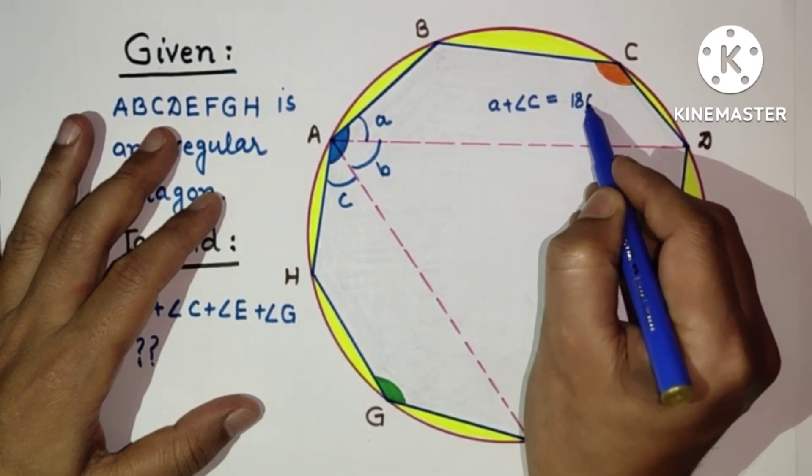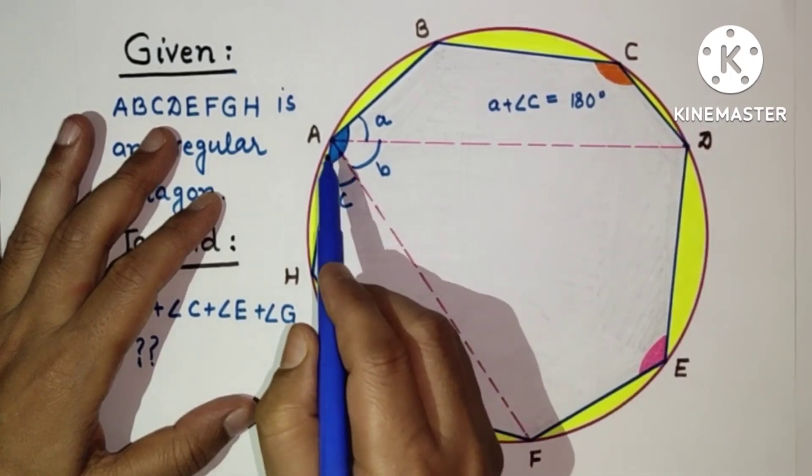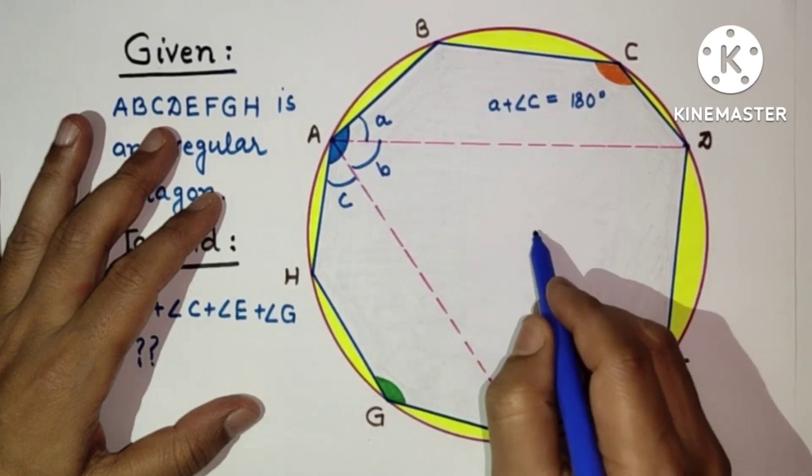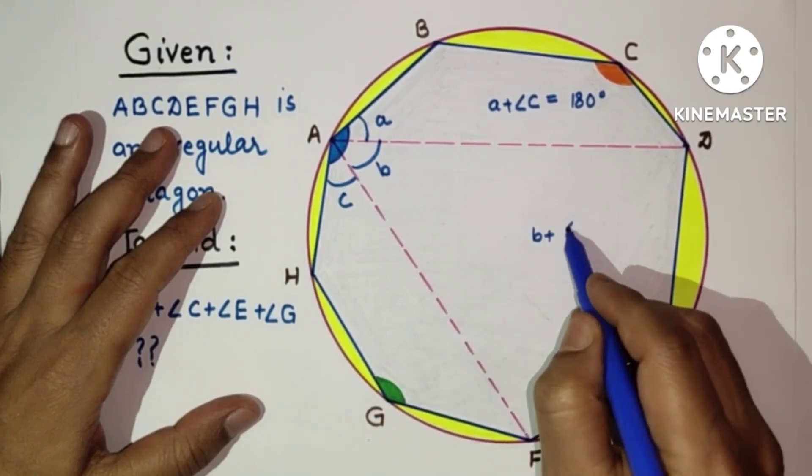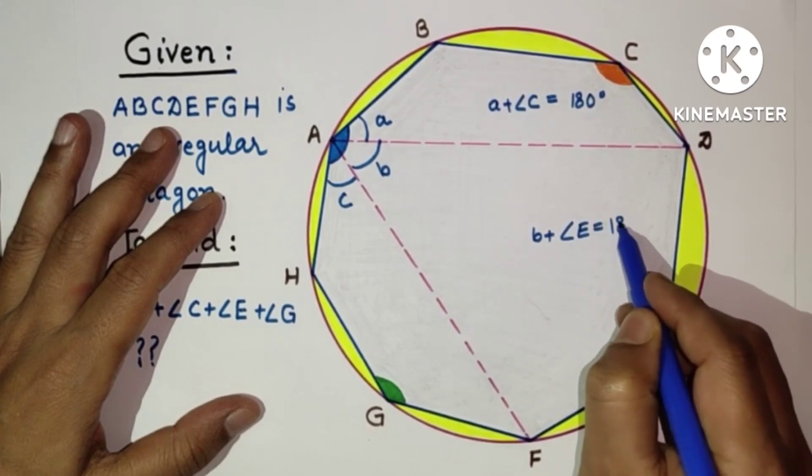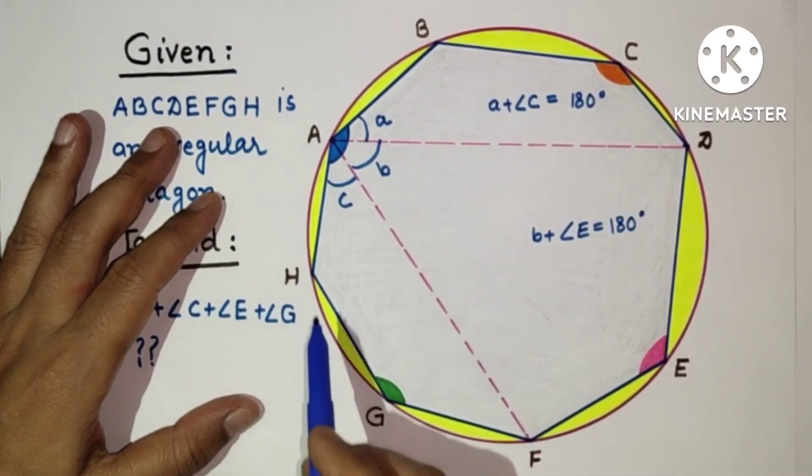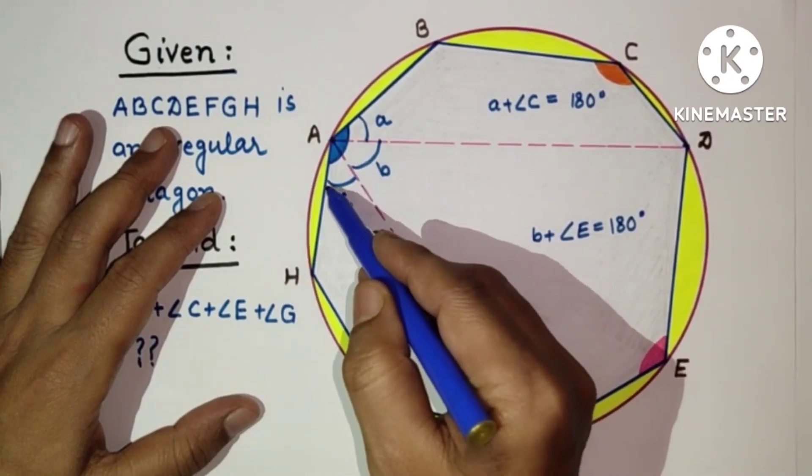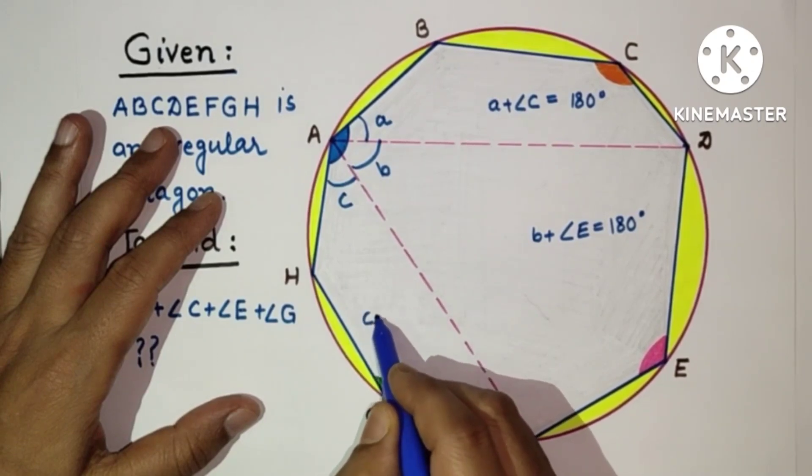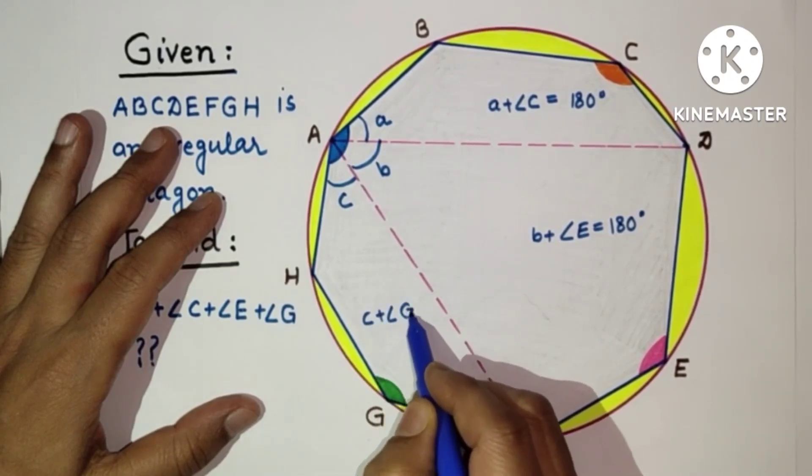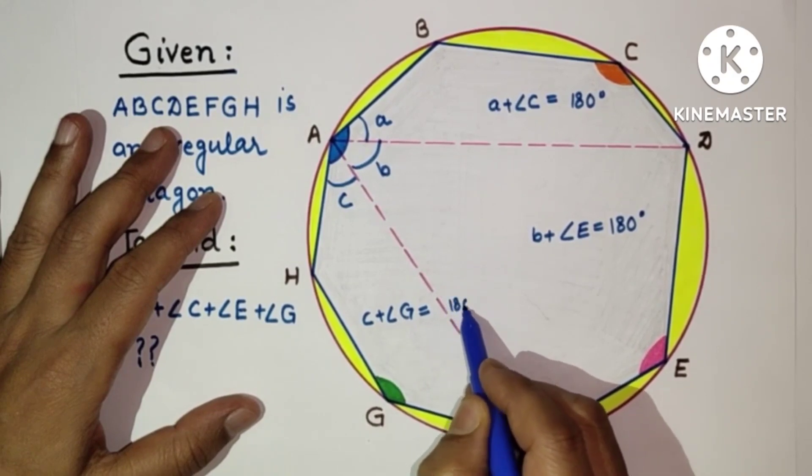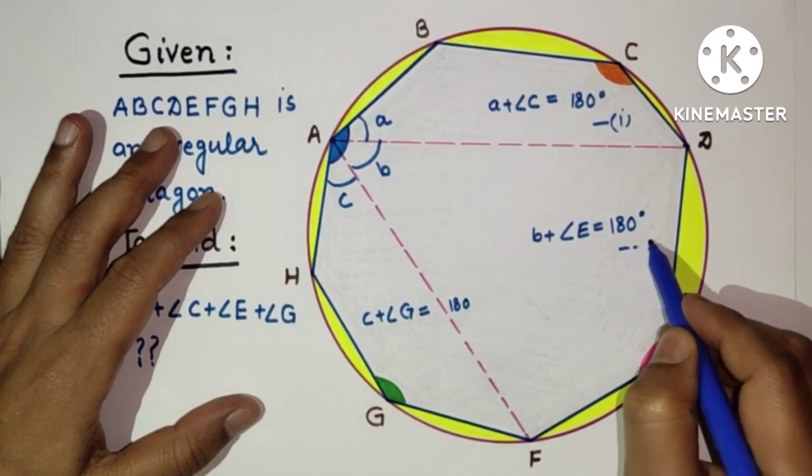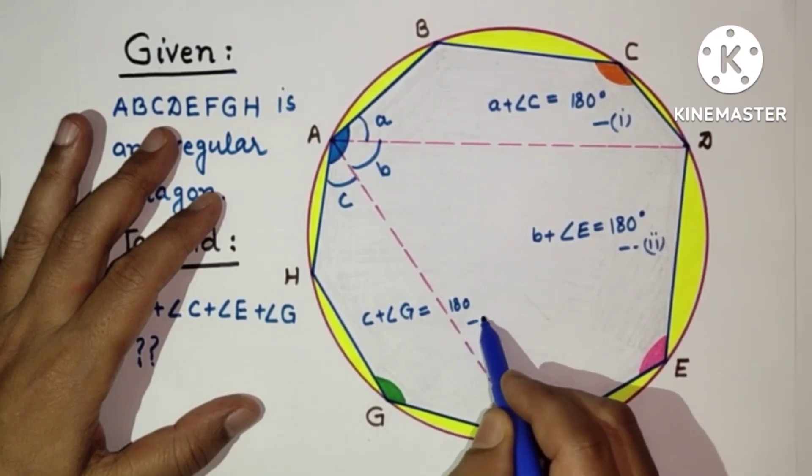For cyclic quadrilateral ADEF, this b and this e: b plus angle e equals 180 degrees. And for the cyclic quadrilateral AHGF, this angle c plus g: c plus angle g equals 180 degrees. So this is first, this is second, and this is third information.